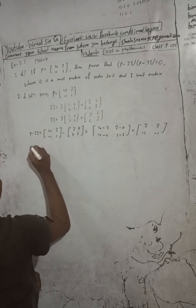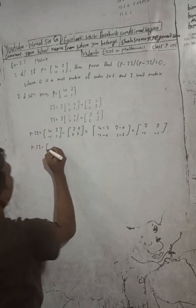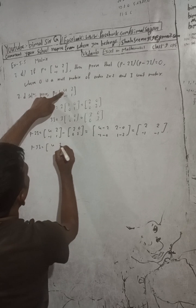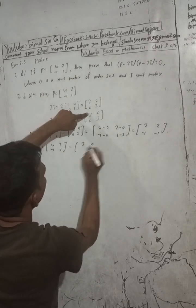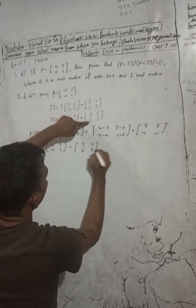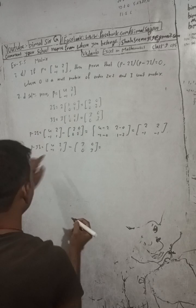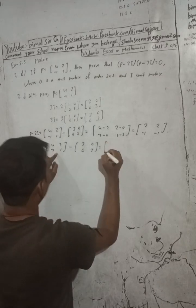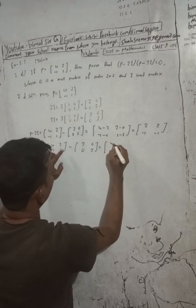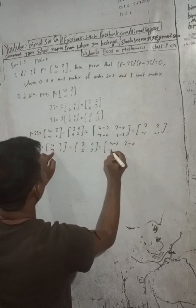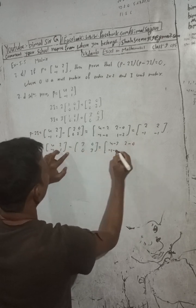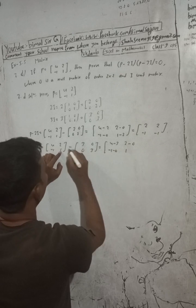P minus 3I: P means [4 2; -1 1] minus 3I, which is [3 0; 0 3]. Our calculation is 4 minus 3, 2 minus 0, minus 1 minus 0, and 1 minus 3.